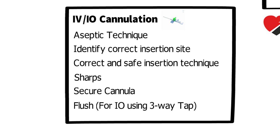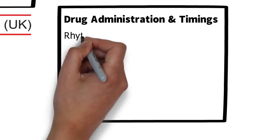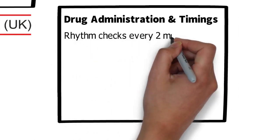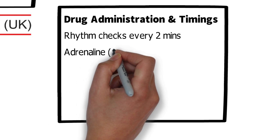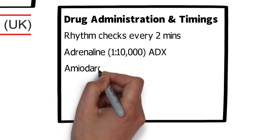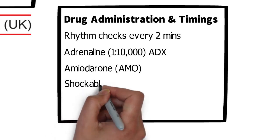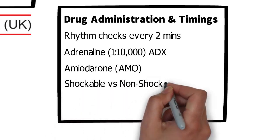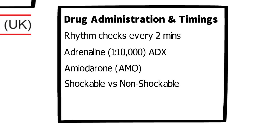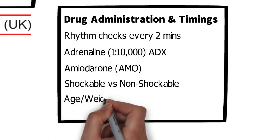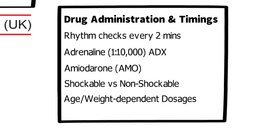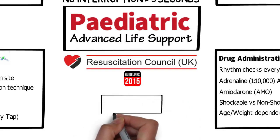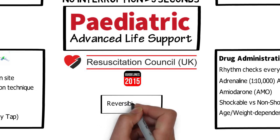Once IV or IO access is gained, we need to consider drug administration and timings. The general principles are the same as adult advanced life support with variations in dosages. Key points are rhythm checks every two minutes, administration of adrenaline 1 in 10,000 and amiodarone — with timings dependent on whether the patient is in a shockable or non-shockable rhythm. Dosages are also age or weight dependent.